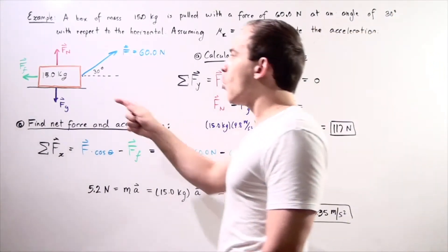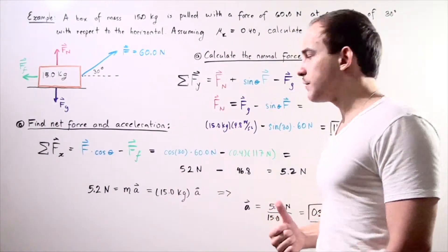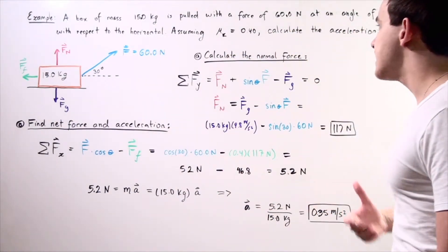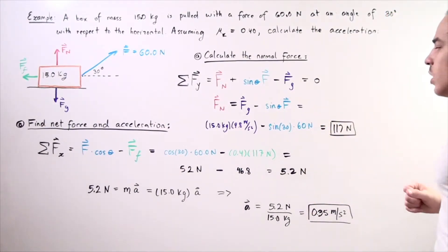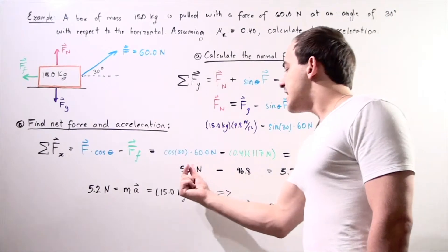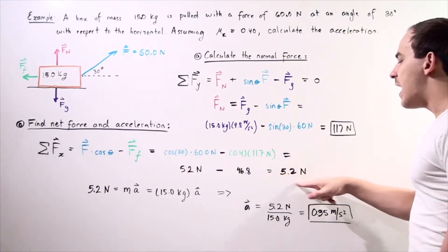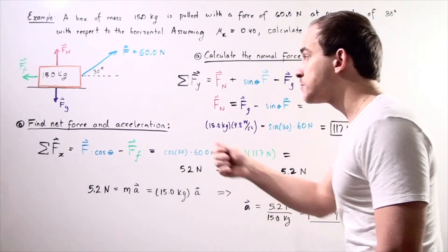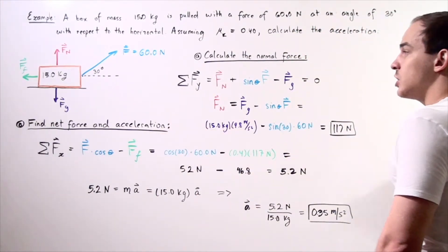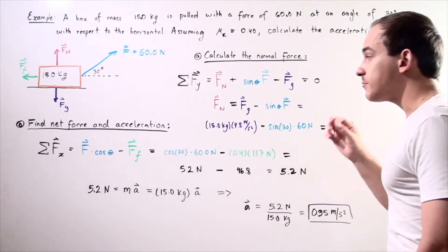Remember, the force of friction equals the coefficient of kinetic friction multiplied by our normal force, which was found to be 117. We get 52 minus 46.8 and find that our net force pulling in the positive direction along the x axis is 5.2 newtons.